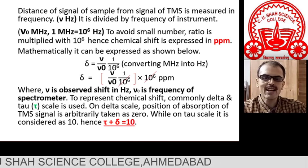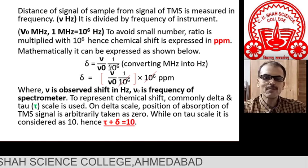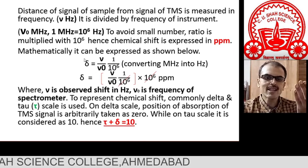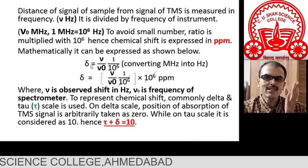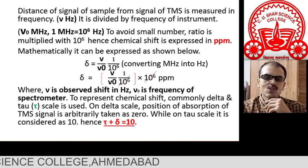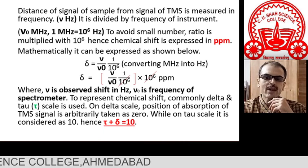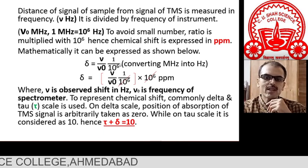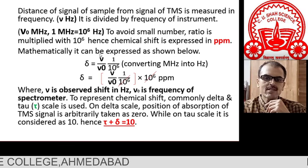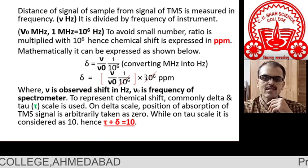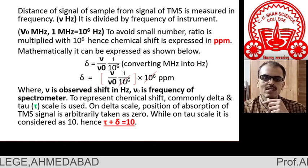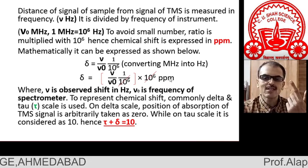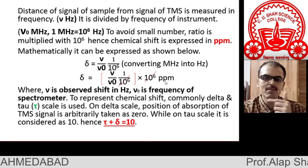The problem is that because a million is in the denominator, delta becomes a very small number — perhaps 0.000005. Such a number is difficult to handle. To overcome this, we multiply the whole expression by 10 to the power 6 (one million), so the millions cancel. Because we multiply by one million, the unit of delta is expressed as PPM — parts per million.